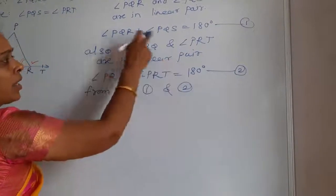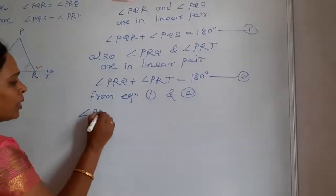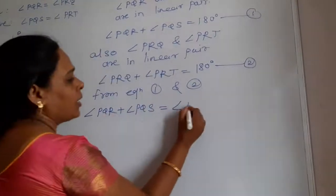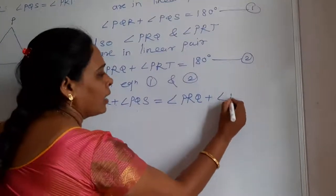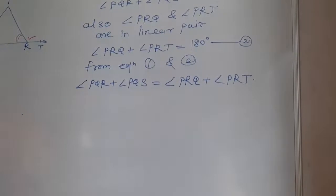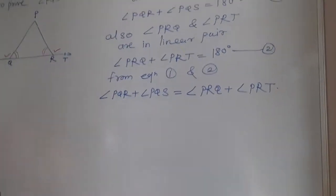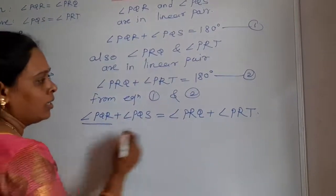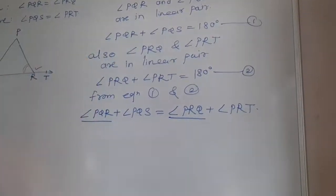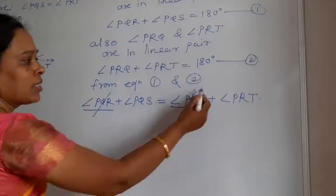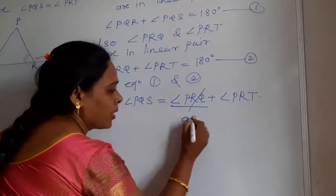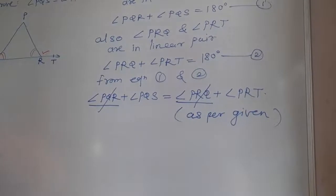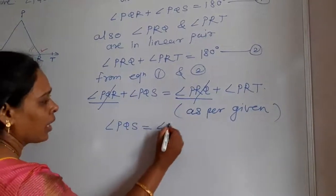From equations 1 and 2, the right-hand sides are equal, so the left-hand sides are also equal: PQR plus PQS equals PRQ plus PRT. But as per the given condition, PQR equals PRQ — these two angles are equal. Since these angles are equal, you can cancel this factor from both sides. Therefore, the remaining terms give us angle PQS equals angle PRT.